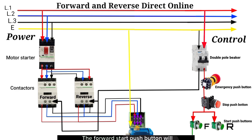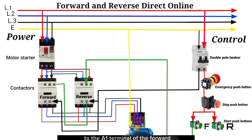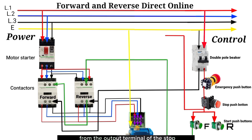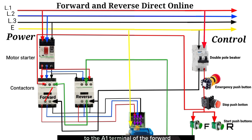The forward start push button connects to the NC input terminal of the reverse contactor. The NC output terminal of the reverse contactor connects to the A1 terminal of the forward contactor. The retaining contact connects from the output terminal of the stop push button to the NO input terminal of the forward contactor, and the NO output terminal of the forward contactor connects to A1 of the forward contactor.